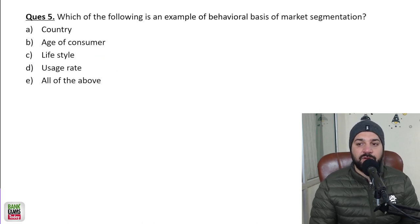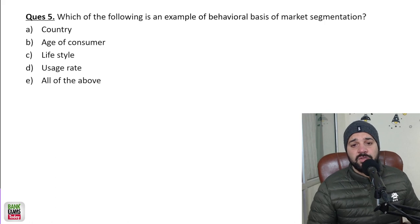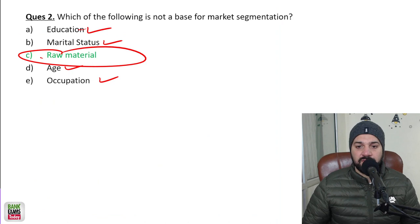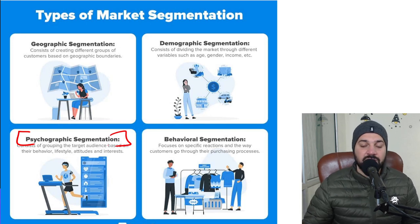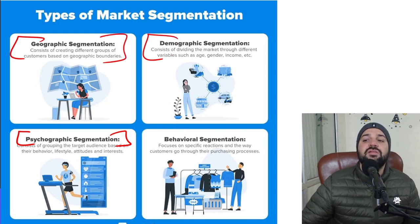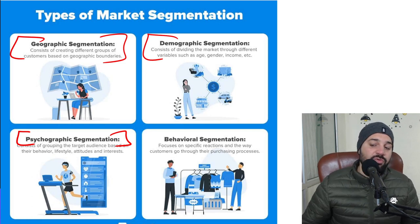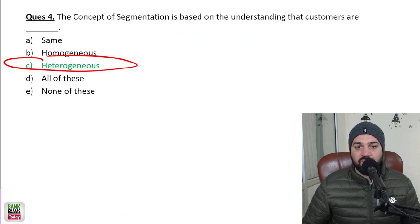Question: Which of the following is an example of the behavioral basis of market segmentation? Lifestyle is NOT behavioral — it is psychographic. Geographic segmentation is according to city or state. Demographic segmentation is according to age, gender, and income. Behavioral segmentation is about how you behave towards various brands.